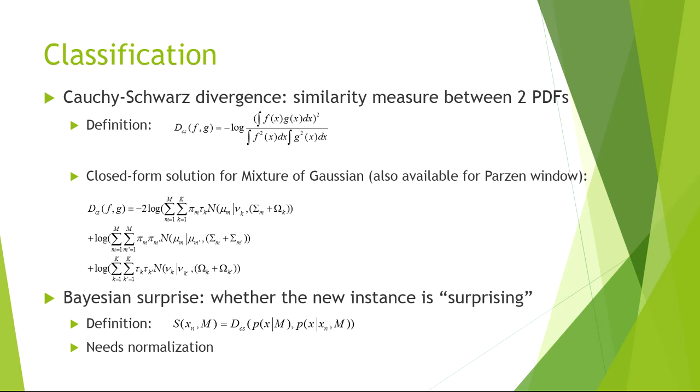For example, if you think that a new instance is mine, then there is a surprise mine. Similarly, there is also a surprise rock. The assumption with the least surprise will be regarded as the class that the object actually belongs to.